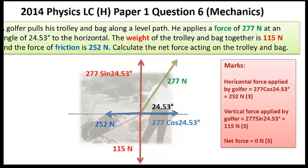In this question you just have to find out the net force on the trolley and the bag. This is where you end up at the end, so I'm going to go back and figure this out. The most important things to realize is that the diagonal force is 277, the weight pulling down is 115, and the friction pulling back is 252. They give you that in the question.